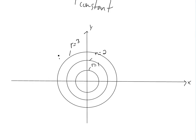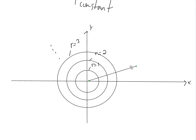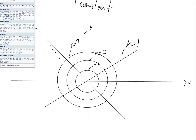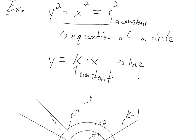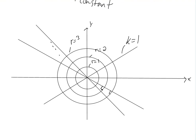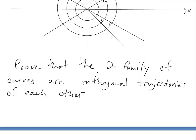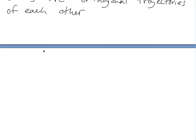Now what we want to do is prove that these two families of curves are actually orthogonal to each other. Looking at it, it appears that every intersection is perpendicular. To prove it, we're going to use implicit differentiation.